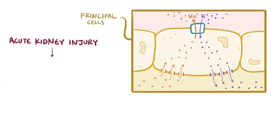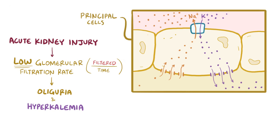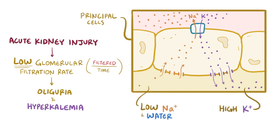Acute kidney injury can cause a low glomerular filtration rate — the volume of blood filtered through the kidney over a period of time — leading to oliguria and hyperkalemia. In these situations, the nephron tries to hold onto salt and water, so by the time filtrate reaches the distal tubule, very little sodium and water remain in the lumen. Having little water in the lumen creates a relatively high potassium concentration there. Additionally, because less sodium is in the distal tubule, less moves through the luminal sodium channel into the principal cell, meaning less potassium gets into the principal cell, resulting in more potassium in the blood and hyperkalemia.